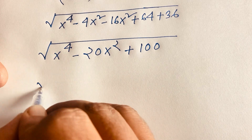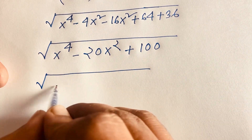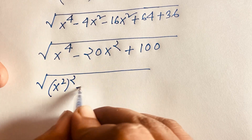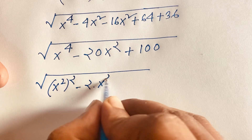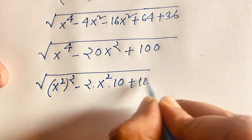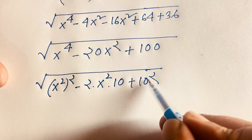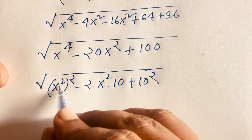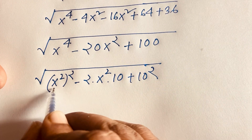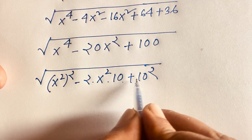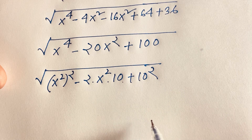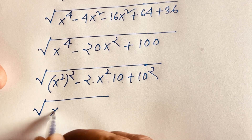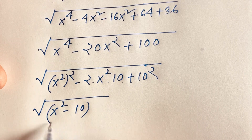Now I recognize this expression under the square root: x to the power 4 minus 20x squared plus 100 is a perfect square trinomial. It equals (x squared) squared minus 2 times x squared times 10 plus 10 squared, which matches the pattern (a minus b) squared. So this equals (x squared minus 10) squared.